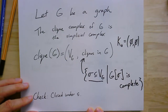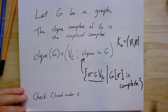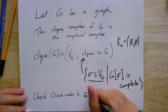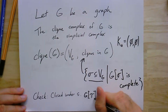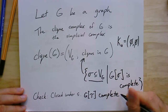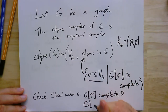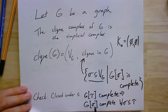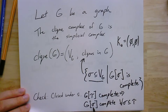The rule to be a simplicial complex has two parts. First, the simplices have to be subsets of vertices — that's in the definition, so that's satisfied. Second, the complex has to be closed under taking subsets: if I take any simplex and I take a subset of that simplex, it should also be a simplex. This is not hard to check: if the induced subgraph on tau is complete, then the induced subgraph on any sigma that is a subset of tau is also complete, because every pair of vertices in tau has an edge, and sigma is just a subset of tau.